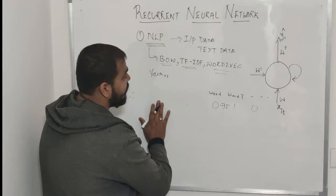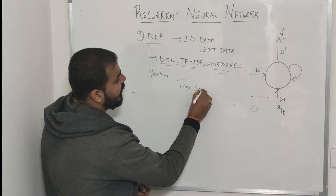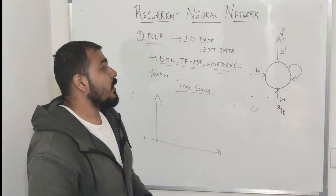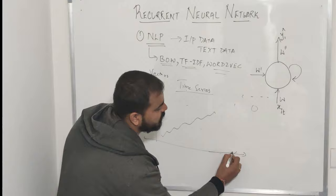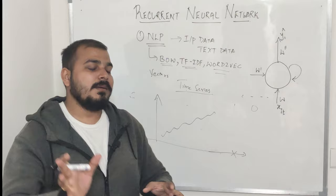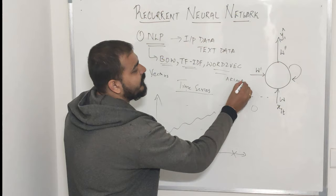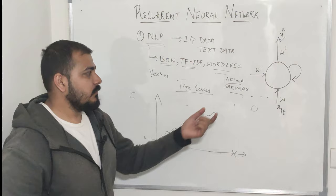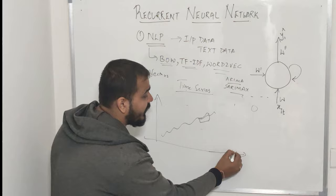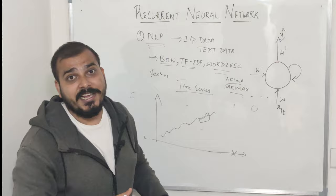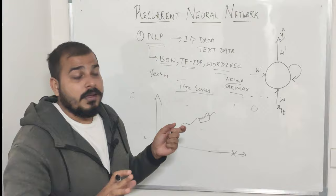The second type of application where RNN is extensively used is time series data. In time series, suppose this is my sales data at a particular time and I need to predict the output. In machine learning, traditional financial techniques include ARIMA, SARIMAX, and various other techniques. These use windows of previous days to predict the future. But in recurrent neural networks, it will make sure to consider some timestamps, and if I'm considering LSTM - long short-term memory - that I'll discuss in part three.